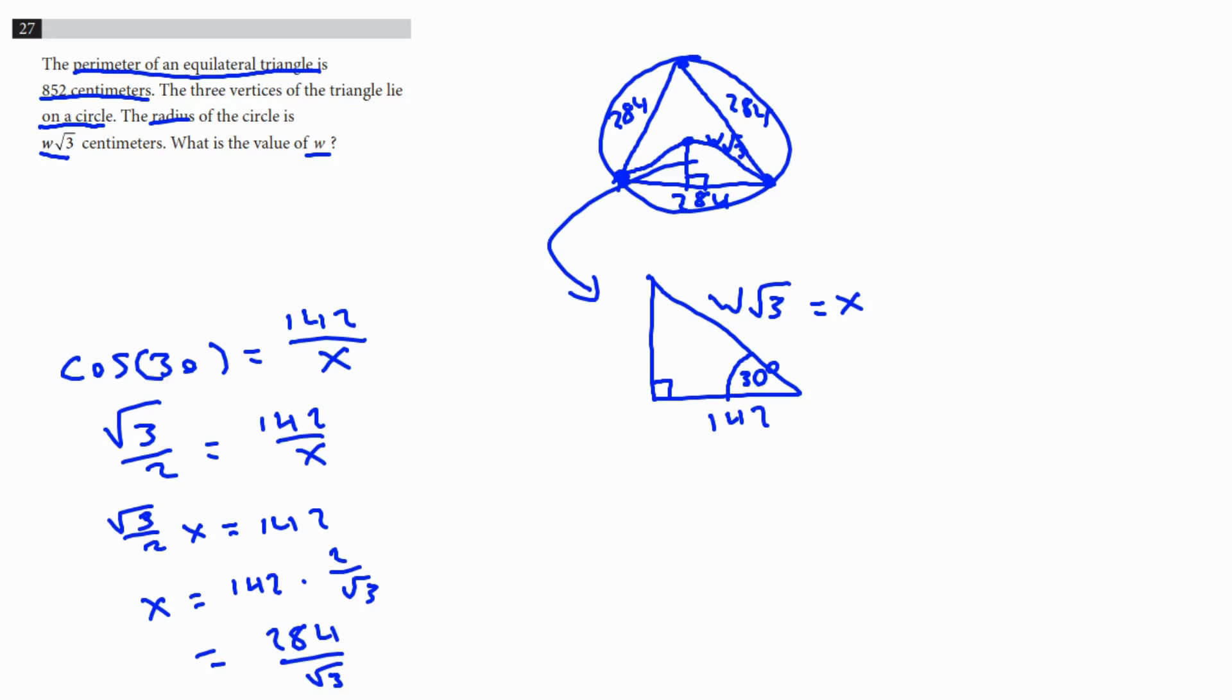So then now, all we have to do now, X is the same as W square root of three. So we just set W square root of three equal to 284 over root three, and then we solve for X. So let's multiply that root three out to the other side. That'll give us three W, because square root of three times square root of three is just three, equals 284. And then we divide by three on both sides. So W is going to be equal to 284 over three, and you can enter your answer just like that.